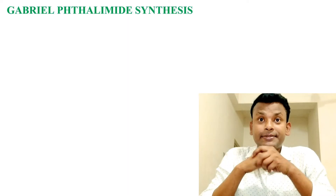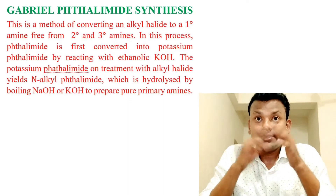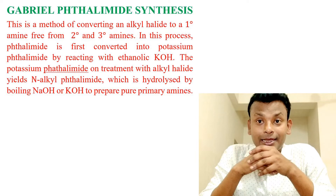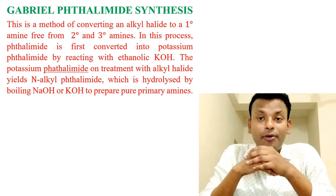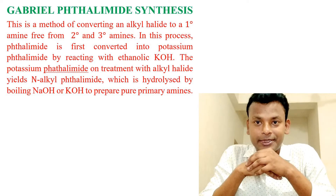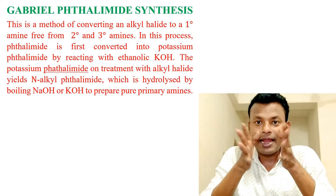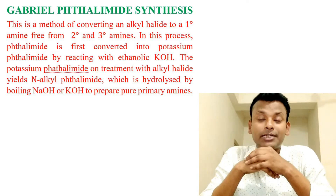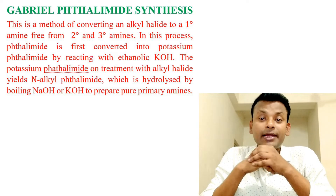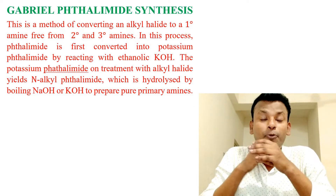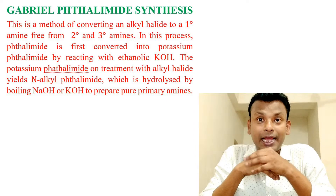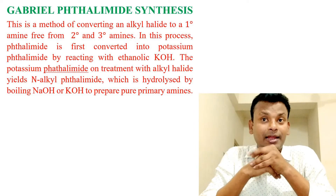So read very carefully. Now watching the whiteboard — Gabriel phthalimide synthesis is a method of converting an alkyl halide to a one-degree amine, free from two-degree and three-degree amines. In this process, phthalimide is first converted into potassium phthalimide by reacting with alcoholic or ethanolic KOH. The potassium phthalimide on treatment with alkyl halide yields N-alkyl phthalimide.